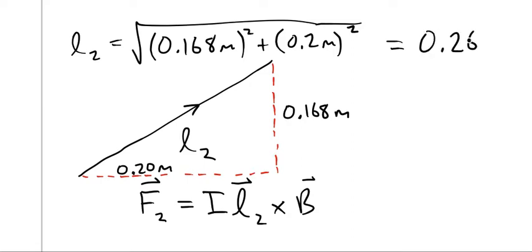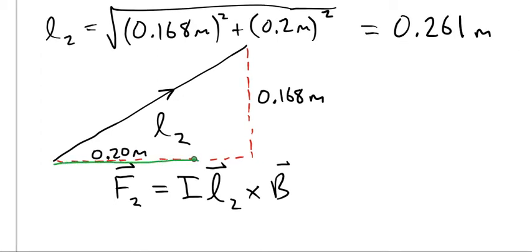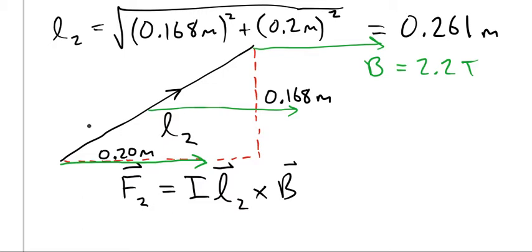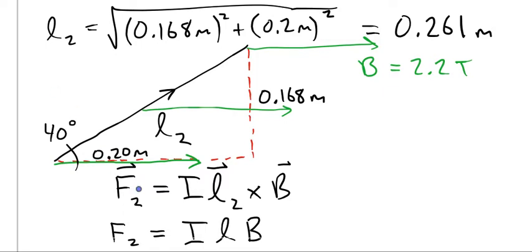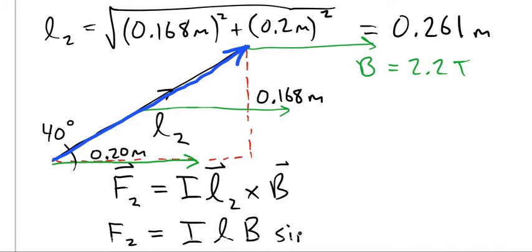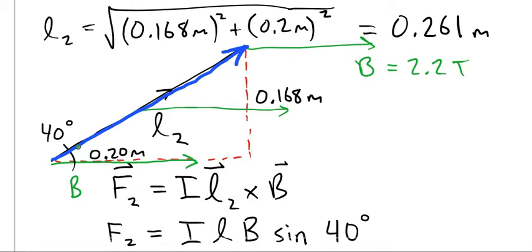So it's going to be this plus this, which is 0.261 meters, and we have the B field, and an angle here of 40 degrees. So when we're finding the magnitude of F2, we should use the formula I times L times B, but keep in mind that L is really pointing in this direction, it points in the same direction as current. So we're going to have to include the sine of an angle.